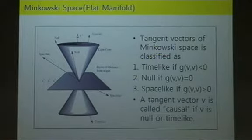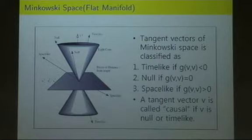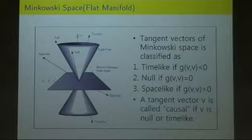If a Riemannian manifold is a manifold with Euclidean space as its tangent space, then a Lorentzian manifold is a manifold with Minkowski space as its tangent space. So to study Minkowski space has sufficient meaning in Lorentzian geometry. Let me first classify the tangent vectors in Minkowski space. Here we use the metric with one minus sign, and the remaining ones are positive.